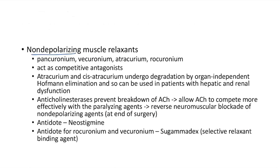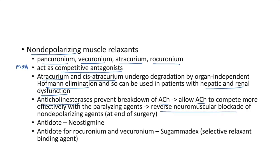Non-depolarizing muscle relaxants include pancuronium, vecuronium, atracurium, and rocuronium. Their mechanism of action is competitive antagonism of acetylcholine at the neuromuscular junction. Atracurium and cisatracurium undergo degradation by organ-independent Hofmann elimination, so they can be used in patients with hepatic and renal dysfunction. Anticholinesterases prevent breakdown of acetylcholine, allowing it to compete more effectively with non-depolarizing agents — so they can be used to reverse neuromuscular blockade. The antidote is neostigmine. A specific antidote for rocuronium and vecuronium is sugammadex, a selective relaxant binding agent.